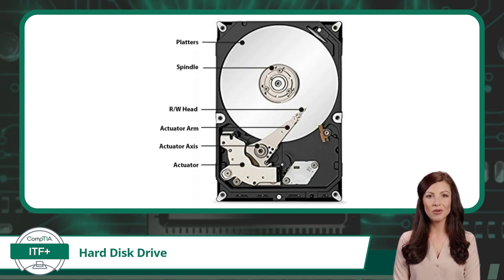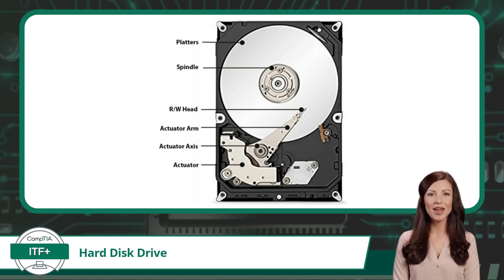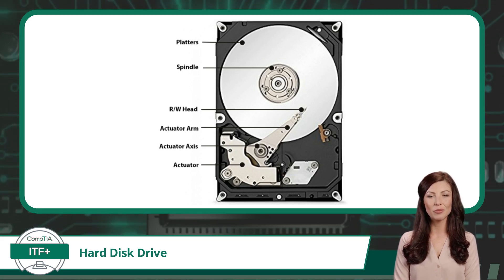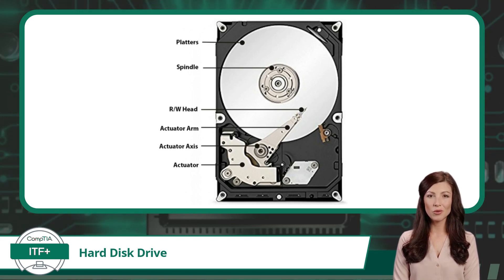To read or write data, an HDD uses a read/write head that hovers just above the surface of the rotating platters. The read/write head moves rapidly across the platter's surface to access the desired data. When reading data, the head detects the magnetic changes on the platter's surface and converts them into electrical signals that can be processed by the computer.